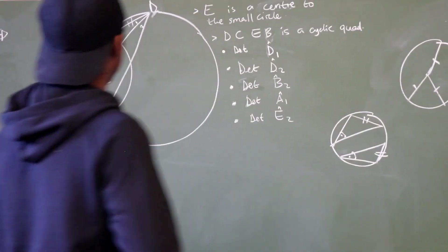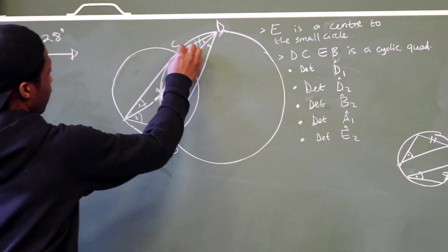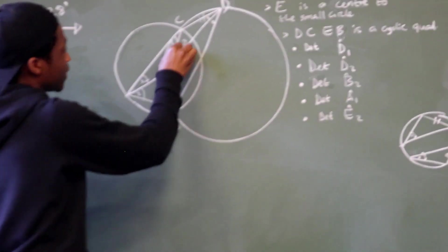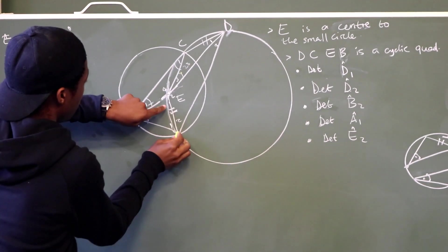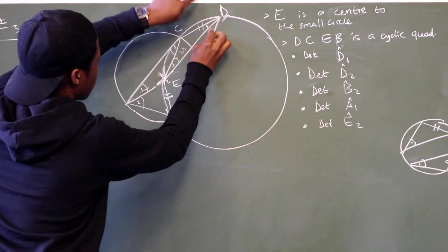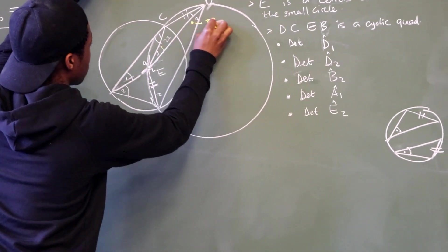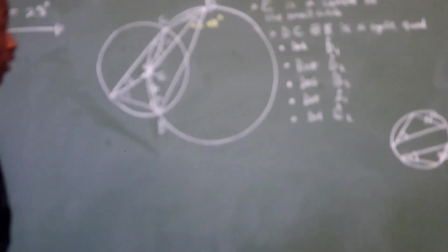Then, if we go to this question, we can see that this chord is subtending 28 degrees to the circumference. Meaning BE is also going to subtend 28 degrees to the circumference. From there, we need to also check...